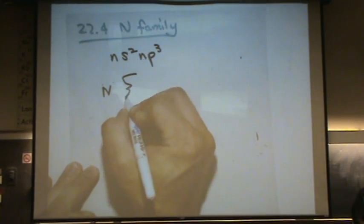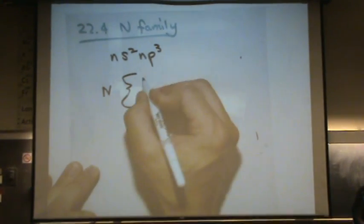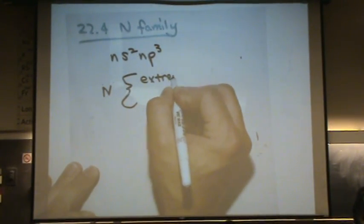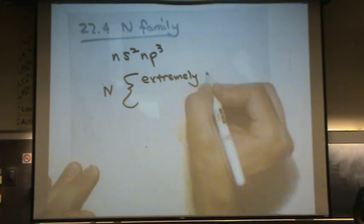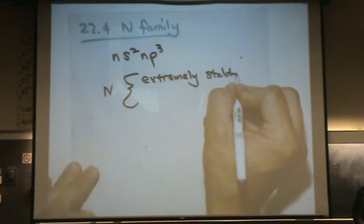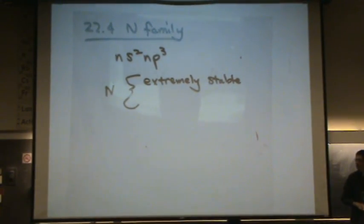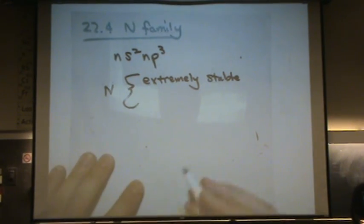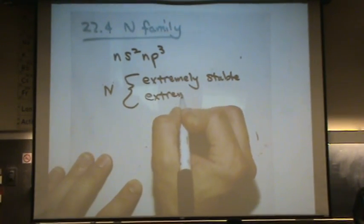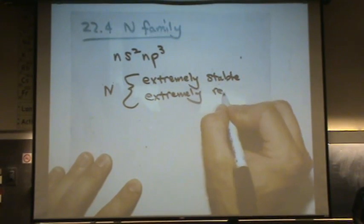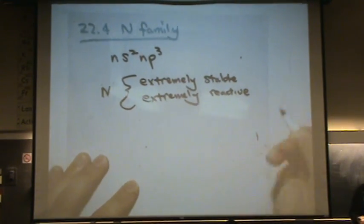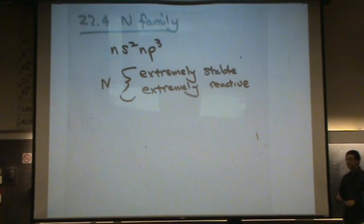The funny thing about it is that nitrogen can be extremely stable like nitrogen in air. That's extremely stable. Or it can be extremely reactive. So some nitrogen compounds are extremely reactive. Many bombs are made with nitrogen, and I'll give you a couple examples.